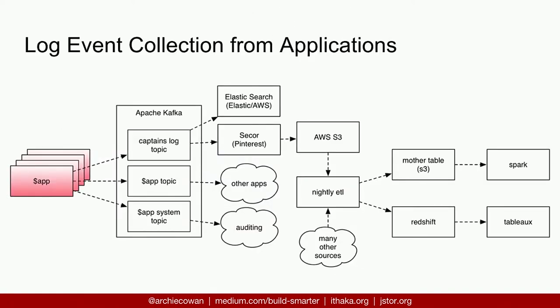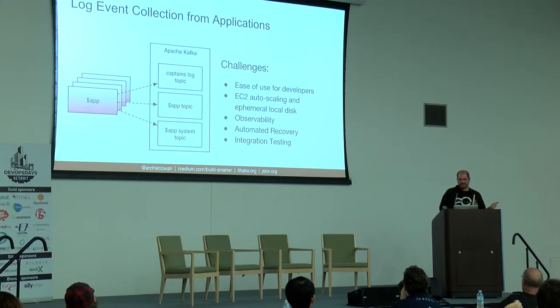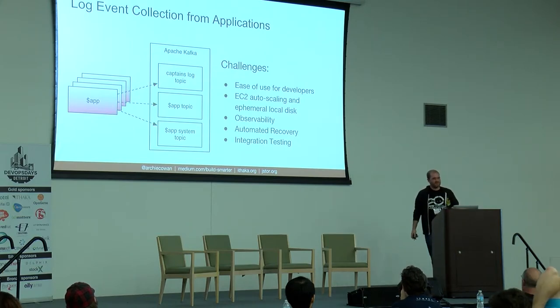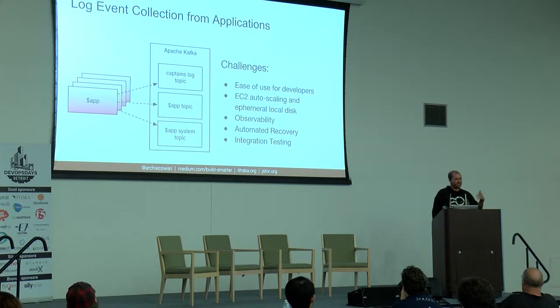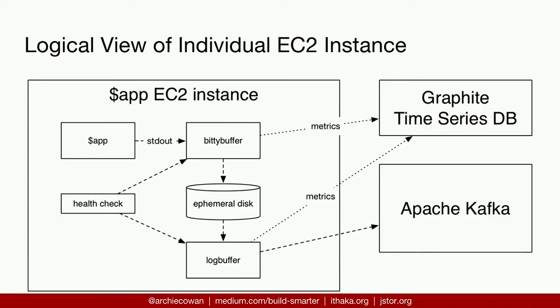Now let's talk about how we get data off the application and onto Kafka. The big challenge is making it easy for our engineers to use. We have over 200 applications that were added very quickly as we transitioned to this model, so we really need to make it easy for everybody to get started. All of our applications run in auto-scaling groups, which creates churn as machines come in and out, so being able to see what's going on is also incredibly important.